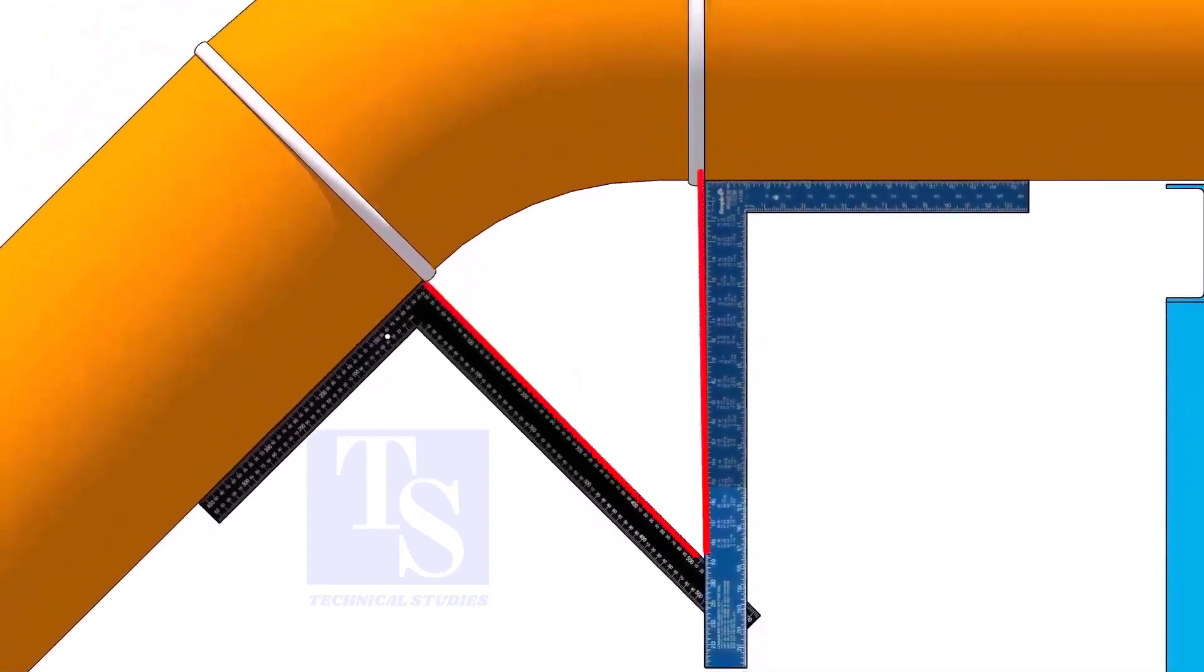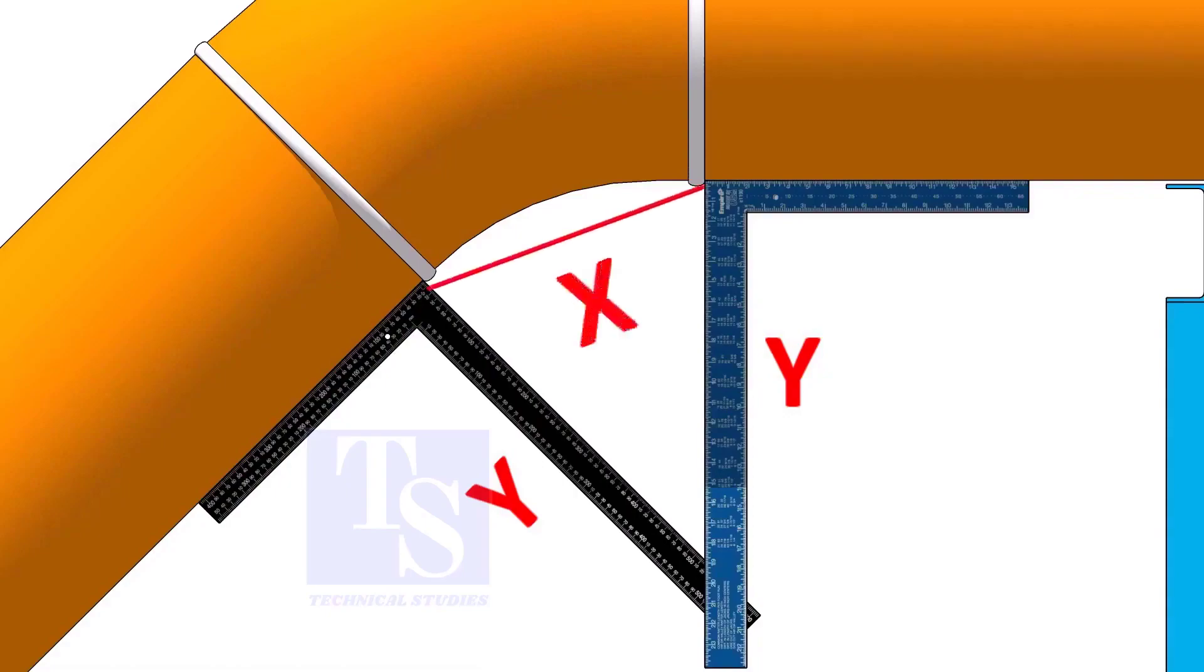Measure the distance from the pipe to the point where the right angles bisect each other. Measuring only one side is enough. Now, carefully measure the distance between the corners of the right angles.